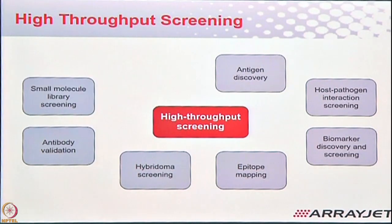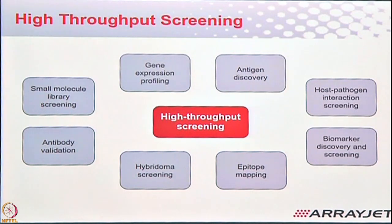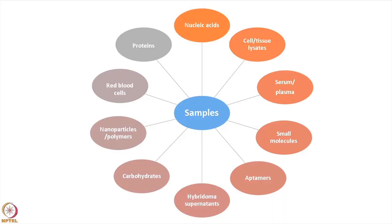We also support antibody validation, small molecule library screening for drug targeting, therapeutic antibody screening, and gene expression profiling. All sample types can be printed: nucleic acids, cell lysates, serum or plasma, small molecules, aptamers, hybridoma supernatants, carbohydrates, nanoparticles and polymers, and cell tissue microarraying as well. The platform is quite flexible — the more you think outside the box about what it can support, the more the answer will be yes, we can do it.